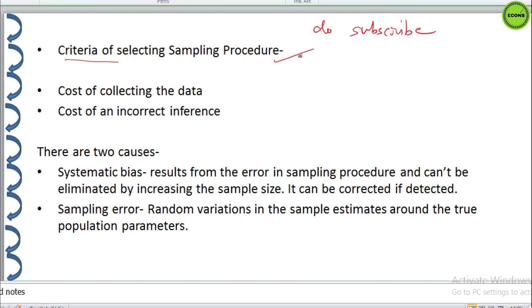In this context, one must remember that two costs are involved in a sampling analysis. These are the cost of collecting the data and the cost of an incorrect inference resulting from the data. The first one is the monetary one and the second is the time and the effort, loss of time and efforts and everything.